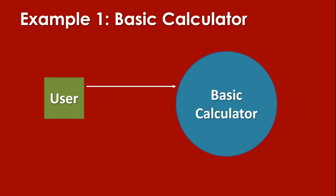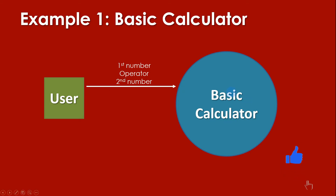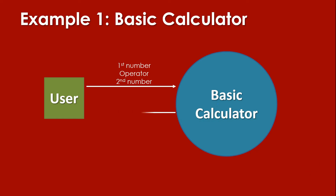What data is being given by the user? The user needs to give the first number, the operator that he needs, and the second number. After sending the first number, the operator, and the second number to the system or process, the process will give something back to the user — the calculated result. This is an example of a context diagram for a basic calculator.